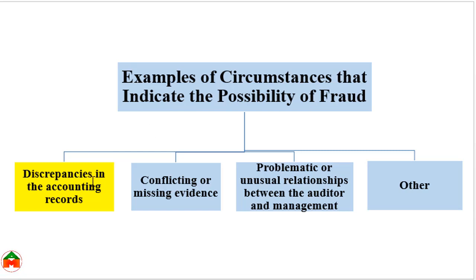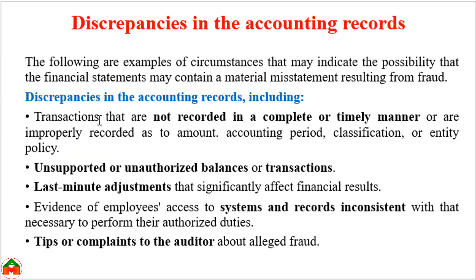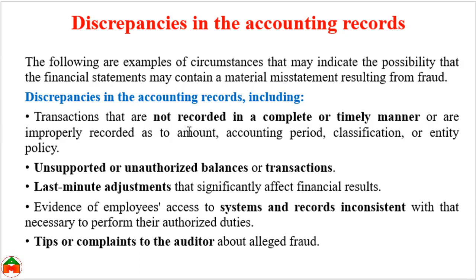The first discrepancy in accounting records that indicates a fraud risk factor is transactions that are not recorded in a complete or timely manner, or are improperly recorded as to amount, accounting period, classification, or entity policy. Whenever there is no record, any timely record, or any incomplete record, that type of symptom or circumstance indicates the possibility of fraud.